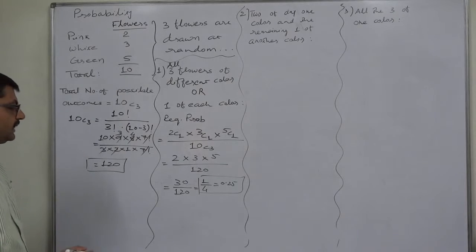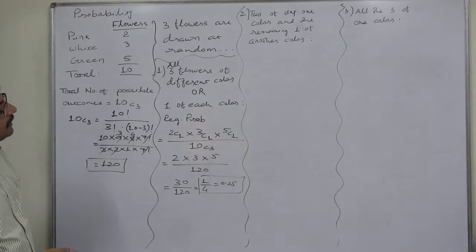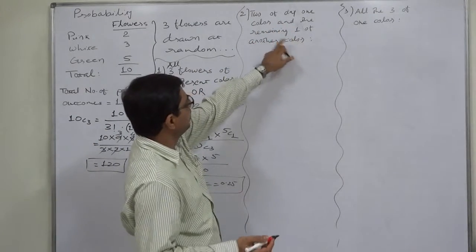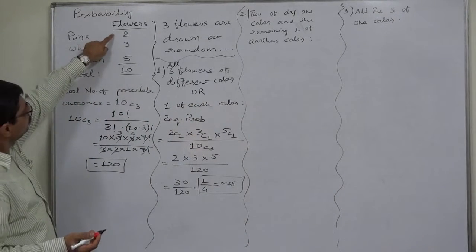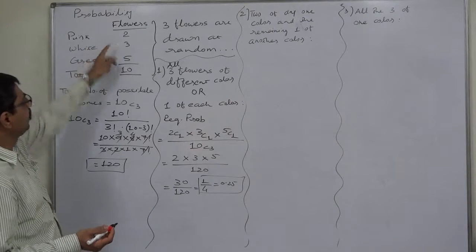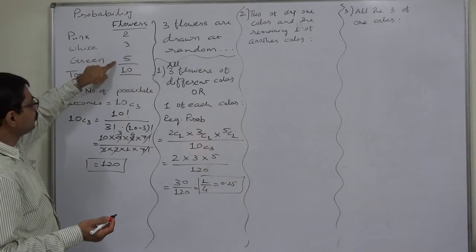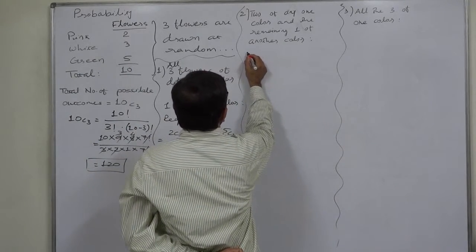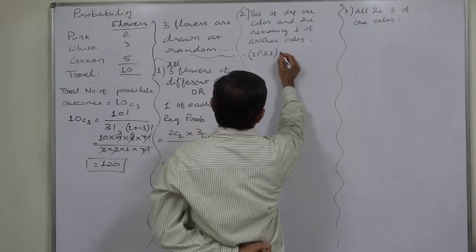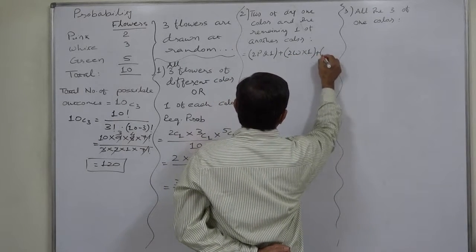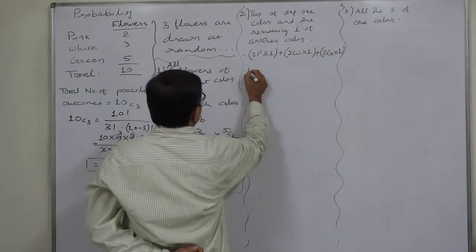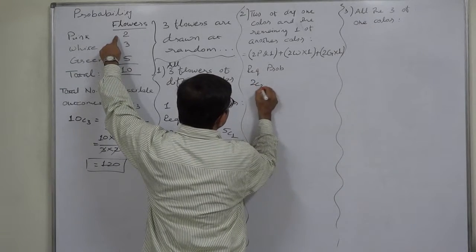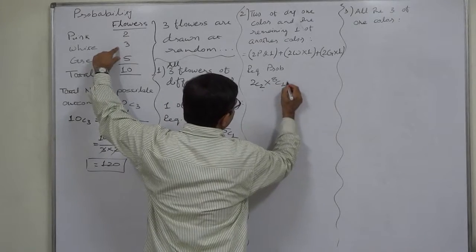The second event: two flowers of any one color and the remaining one flower of another color. That means two pink and one from the remaining eight, or two white and one from the remaining seven, or two green and one from the remaining five. For favorable cases: two pink out of two drawn in 2C2 ways, and one out of remaining eight in 8C1 ways.